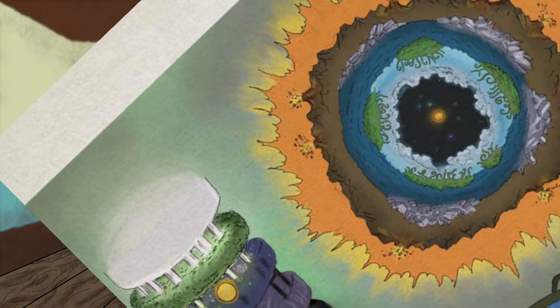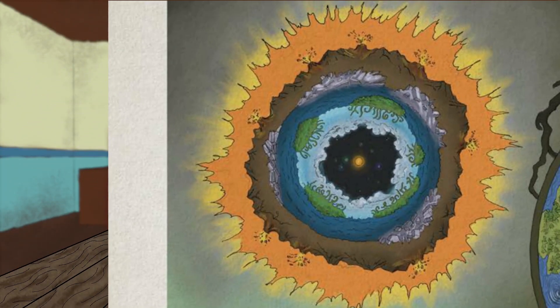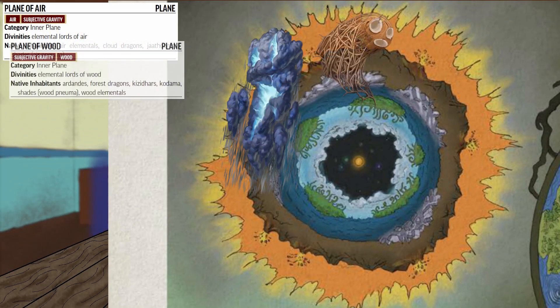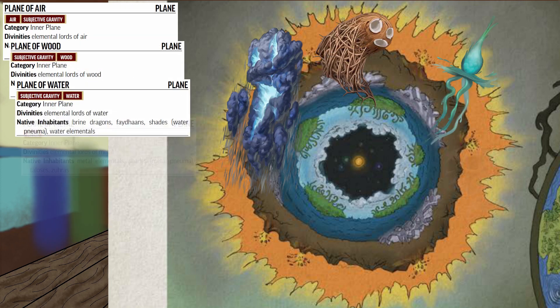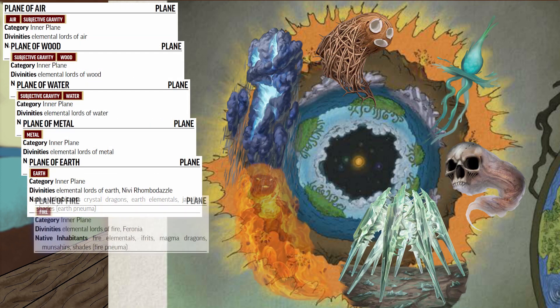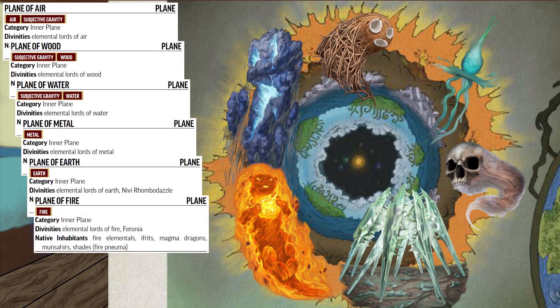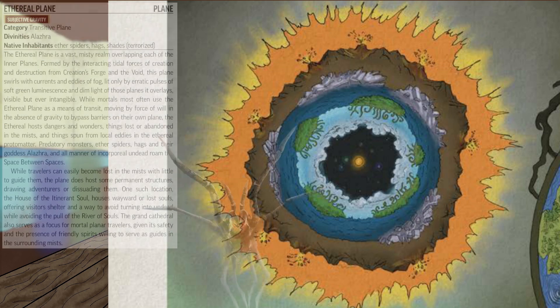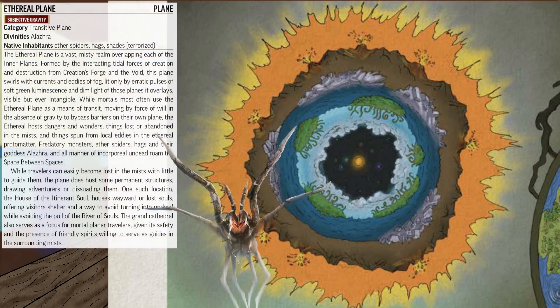Surrounding this stack are the planes of air, wood, water, metal, earth, and fire. This forms a four-dimensional onion, and overlapping all of this is the transitive ethereal plane. All of this makes up the inner sphere, the source of mortal souls and the cycle of quintessence — the fuel and substance of reality.